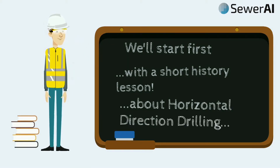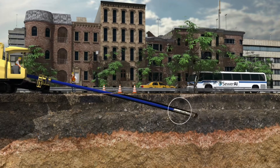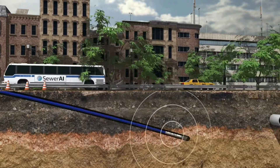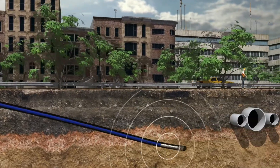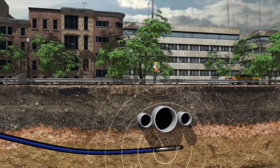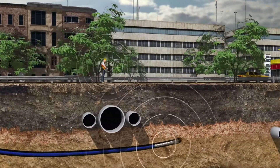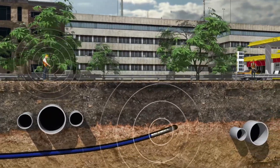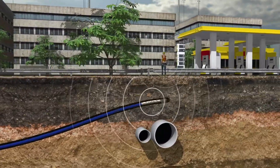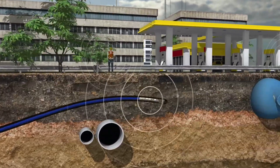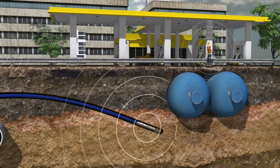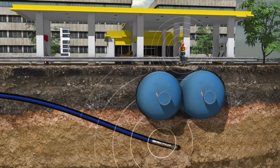Horizontal Directional Drilling, HDD, is a beneficial trenchless technology that's been used for decades as a way to install small diameter underground utilities serving people in dense environments and with very little need for excavation.